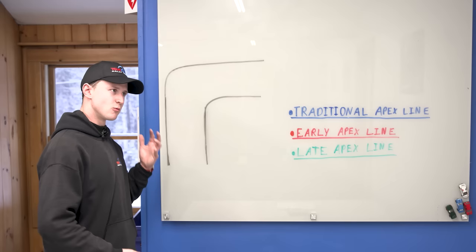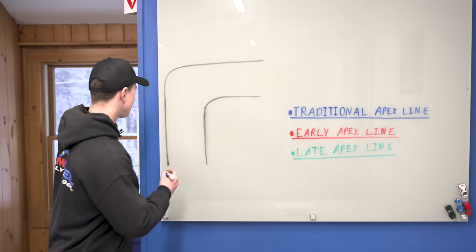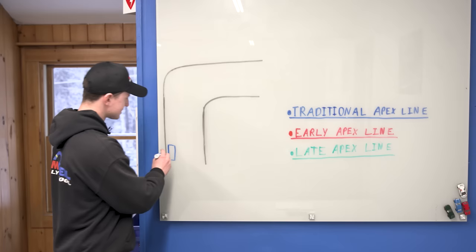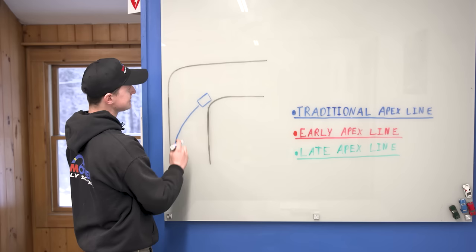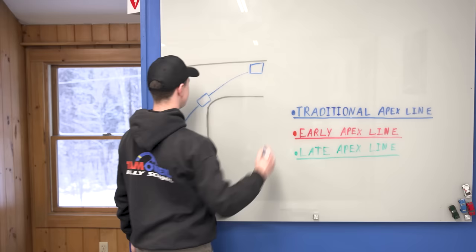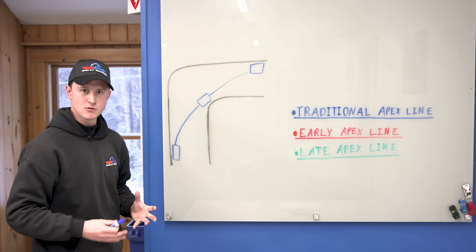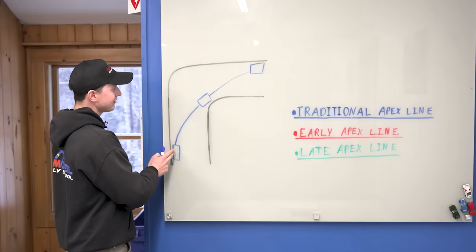A traditional apex line is probably the one most people are most familiar with. If you've ever done any fast driving on pavement or watched racing like Formula One, this is probably a line you're very used to seeing. It involves the car starting the turn out on the outside of the road, turning in to get really tight to the inside right at the apex of the corner — the most prominent point — and then using the whole road on the exit to let the car track out.